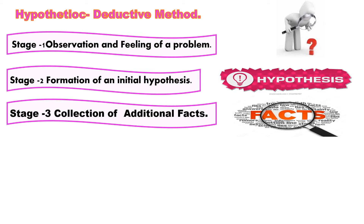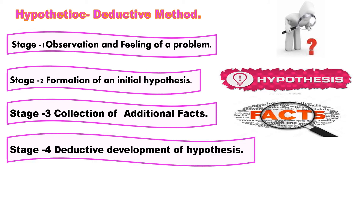The fourth stage is the deductive development of the hypothesis. This stage is not required in cases where the hypothesis can be verified directly by observation or experiment. But when a hypothesis cannot be verified directly, the scientist makes use of deductive reasoning. The scientist constructs a deductive argument, supposes the hypothesis to be true, uses it as a premise, and deduces the consequences from it.